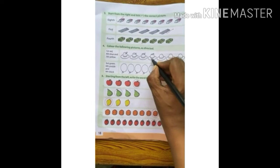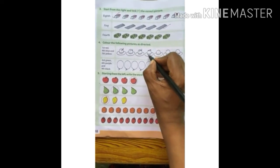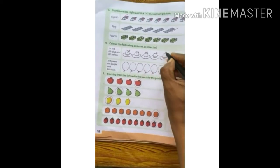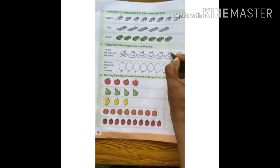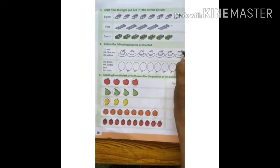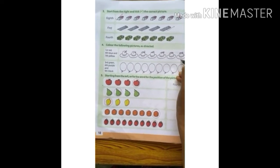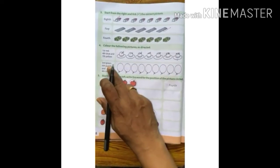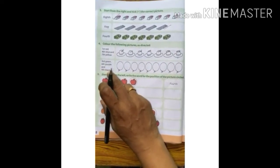And now the 7th cap. Which is 7th? Counting from 4th: this is 5th, 6th, and this is 7th. So 7th cap you have to colour yellow. Next, 3rd green colour, 6th purple colour, and 9th black colour.